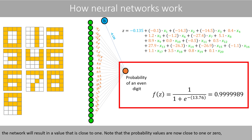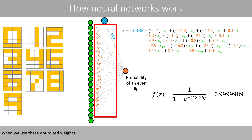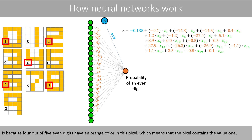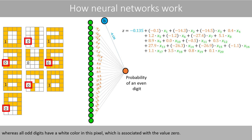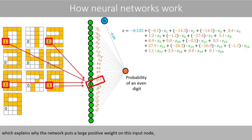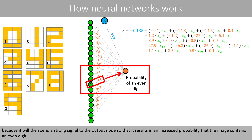Note that the probability values are now close to 1 or 0 when we use the optimized weights. For example, the reason why this weight has a large positive value is because 4 out of 5 even digits have an orange color in this pixel, which means that the pixel contains the value 1, whereas all odd digits have a white color in this pixel, associated with the value 0. So if this pixel contains the value 1, we are 100% certain the image contains an even digit, which explains why the network puts a large positive weight on this input node — it sends a strong signal to the output node, resulting in an increased probability of an even digit.